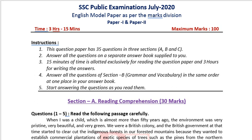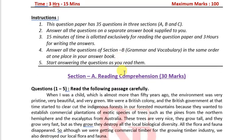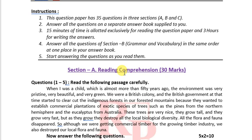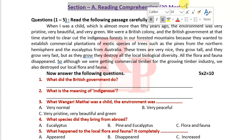Hi students and my dear friends, a warm welcome to the High School channel. Today I am going to explain the SSC public examination July 2020 English model paper key. I have got this paper from one of the WhatsApp groups. It is useful to you for forthcoming examinations in July month. So let's see the English paper. Section A is reading comprehension, which is for 30 marks.